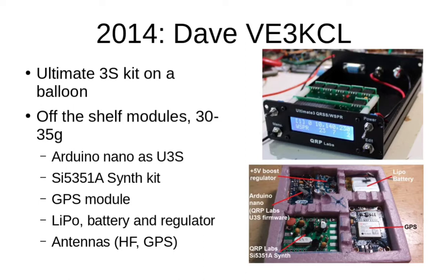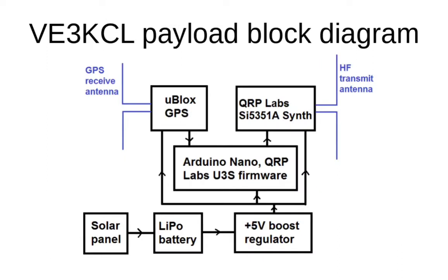This email from Dave really initiated a long series of developments and friendship which has spanned the intervening years and continues to this day. Here is a block diagram of the VE3KCL payload back in 2014, showing the various modules and how they connected together. It's important to realise the Arduino Nano was not acting as an Arduino Nano at all — it was programmed with a special version of the QRP Labs Ultimate 3S firmware and used because it was a much smaller board than the QRP Labs board, which had never been designed with ballooning in mind.